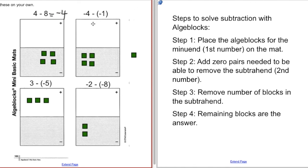Next example is negative 4 minus negative 1. Well, I've got negative 1 here, so I can just take that negative 1 away. And that's going to leave me with negative 3. So negative 4 minus negative 1 equals negative 3.